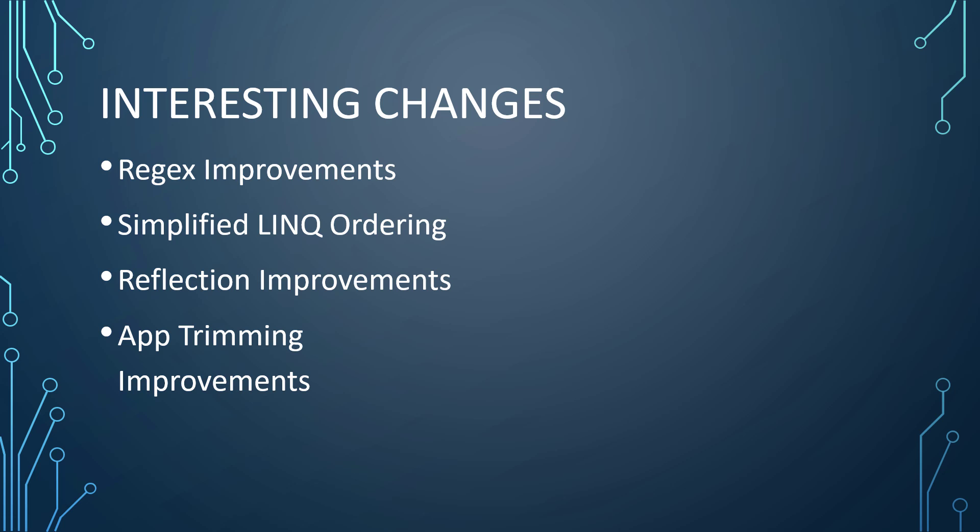If you're not familiar with app trimming, when you build a self-contained application you can trim out all the parts of .NET that aren't relevant to your specific application. That makes for a smaller .exe file. There are some improvements to app trimming, specifically in trimming libraries, so that the class library you depend on can also be trimmed based upon which .exe is using that DLL. There are also improvements with DateTime, where we now have the ability to get microsecond and nanosecond values, allowing for more specific timing values.